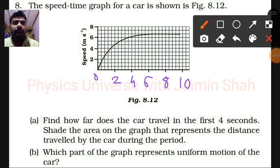This question: the speed-time graph for a car is shown in this figure. First question - find how far does the car travel in the first four seconds. Shade the area on the graph that represents the distance traveled by the car during the period.